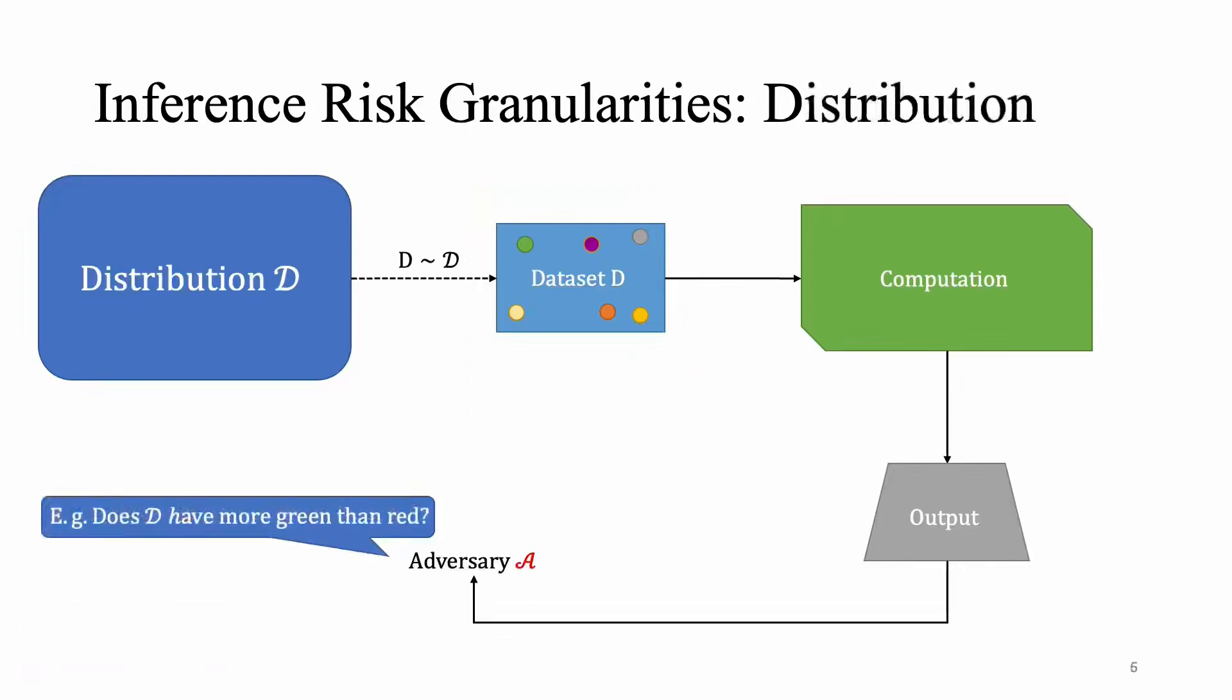Now coming over to the distribution level, things get slightly different because the adversary no longer cares about the particular data set but the underlying distribution from which that data set was sampled. So let's say the adversary looks at the machine learning model and wants to infer whether the underlying distribution had more green samples than red samples. And that is clearly a property of the distribution because there are multiple possible data sets from the distribution that would satisfy the same property and yet would output obviously different data sets and consequently different machine learning models.